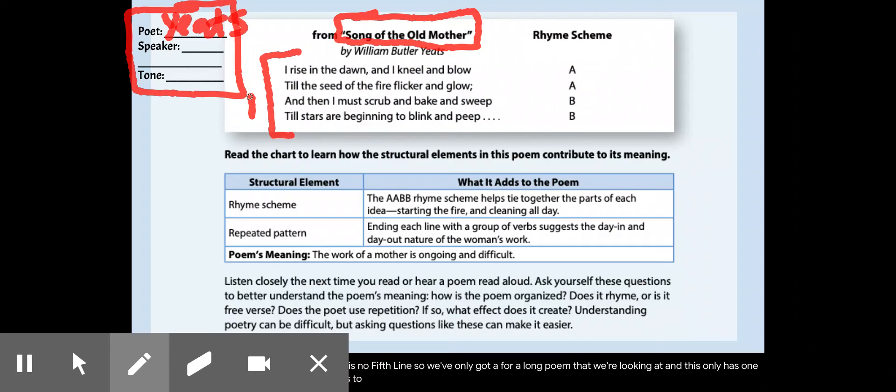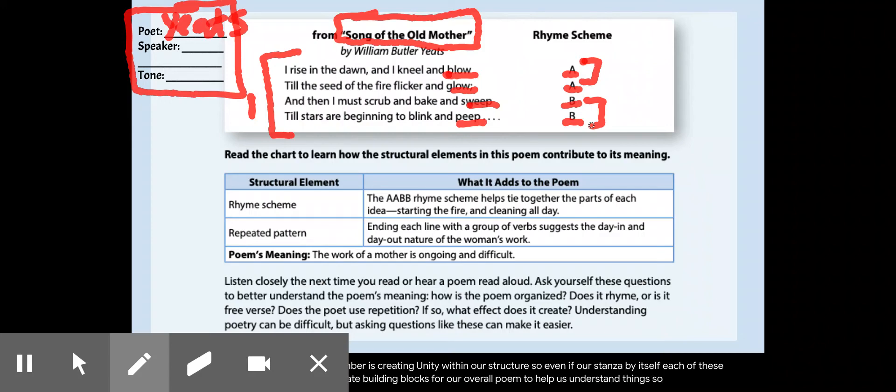Now, our next step is always to go through and look to see if we have a rhyme scheme. We always want to look at our last word of each line, and I have blow, glow, sweep, and peep. Well, my very first one's going to get the letter A, and glow rhymes with blow, so it's also going to get a letter A. Sweep does not rhyme with anything above it, so it gets a new letter B, and peep rhymes with sweep, so it's also going to get the same letter B. Now, the whole point of this, remember, is creating unity within our structure. Even if our stanza by itself has one whole meaning, each of these couplets, because that is what they are called, create building blocks for our overall poem to help us understand things. So, we're going to go through it, and we're going to read our poem, and then we will go back and talk about and see what repetition we can find and what each of these couplets means.